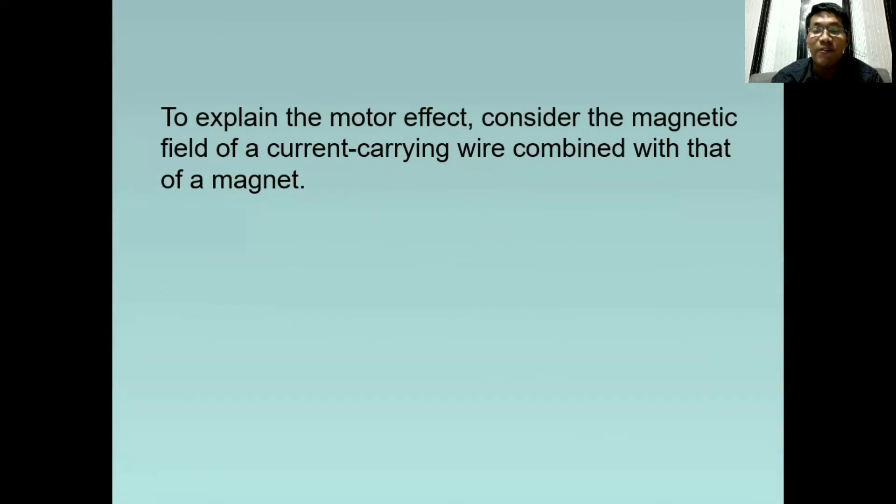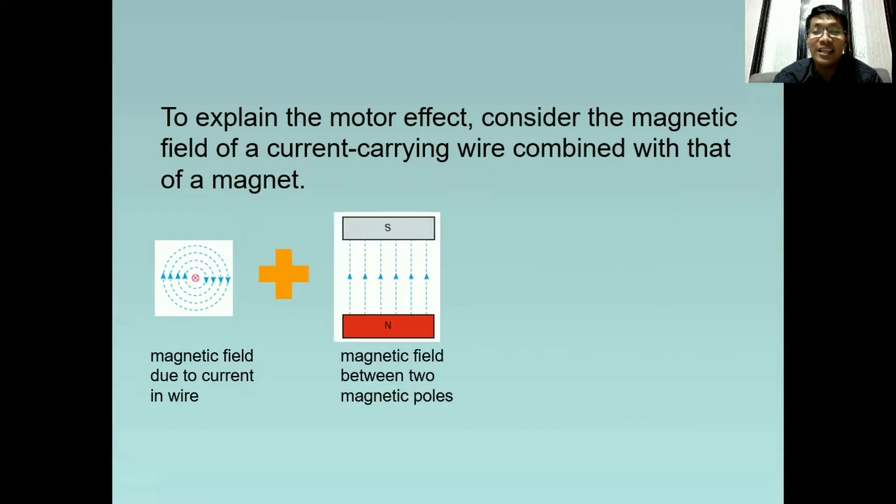To explain the motor effect, consider the magnetic field of a current carrying wire combined with that of a magnet. So it's like this: this is the magnetic field due to the current in a wire, then this is